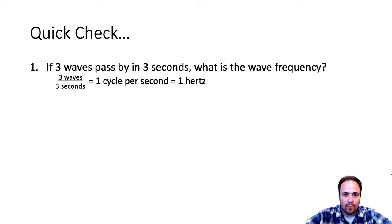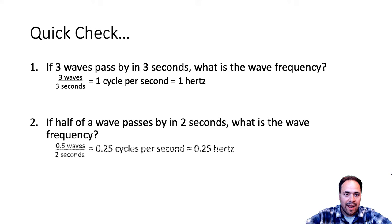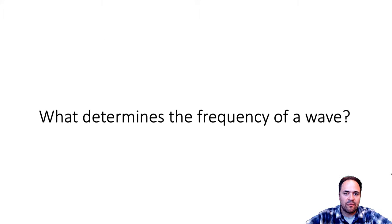If half of a wave passes by in two seconds, the frequency is one-half divided by two seconds, which gives 0.25 cycles per second, or 0.25 hertz. Now, what determines the frequency of a wave? For this, we're going to look at a PhET simulation and try some things out.